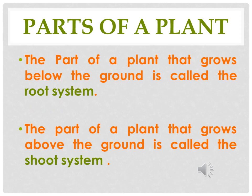The part that grows below the ground is called the root system of a plant. The part that grows above the ground is called the shoot system of a plant — the part of the plant that is visible to us with our naked eyes is its shoot system. The root system is underground.